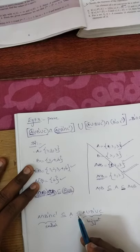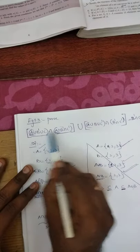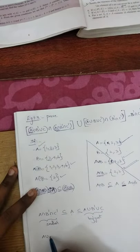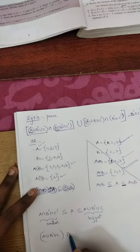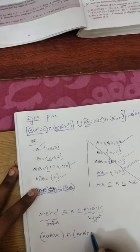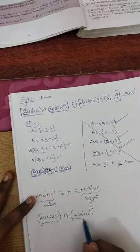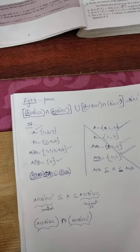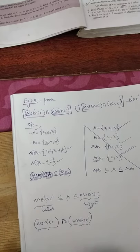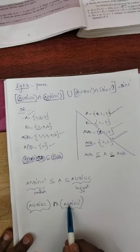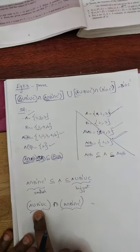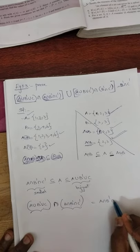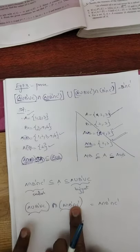After writing the subset relationship, I want to make this intersection part. I take: A union B dash union C, intersection, A intersection B dash intersection C dash. This is one pair and this is one pair. Between these two pairs, intersection is present. Intersection is nothing but smallest. So, biggest intersection smallest — I take the smallest only. Therefore: A intersection B dash intersection C dash.